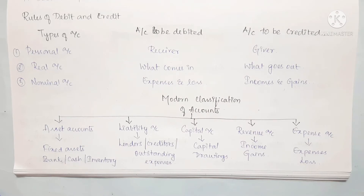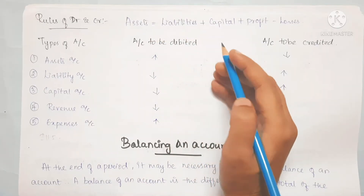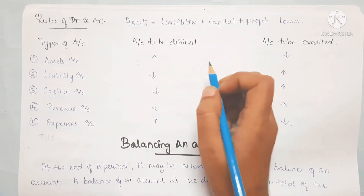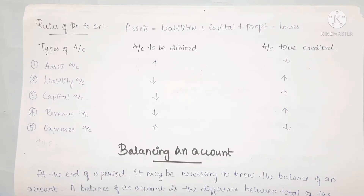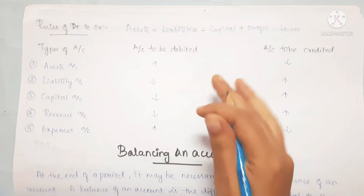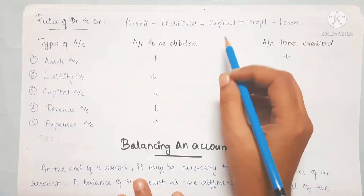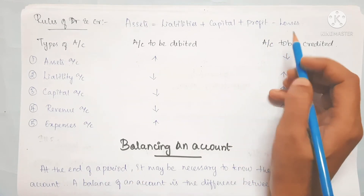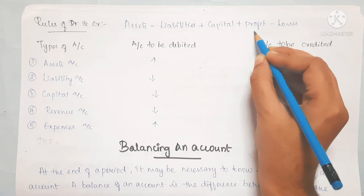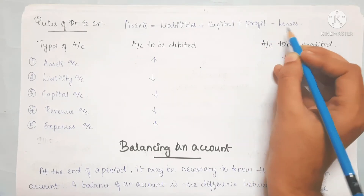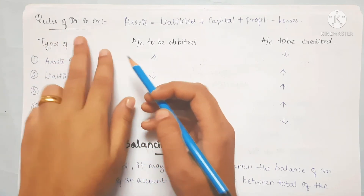Next are the rules. The modern classification of accounts follows the accounting equation formula: Assets = Liabilities + Capital. We can also elaborate this as: Assets = Liabilities + Capital + Revenue - Expenses (or losses). This is the accounting equation used to understand the rule of debit and credit.